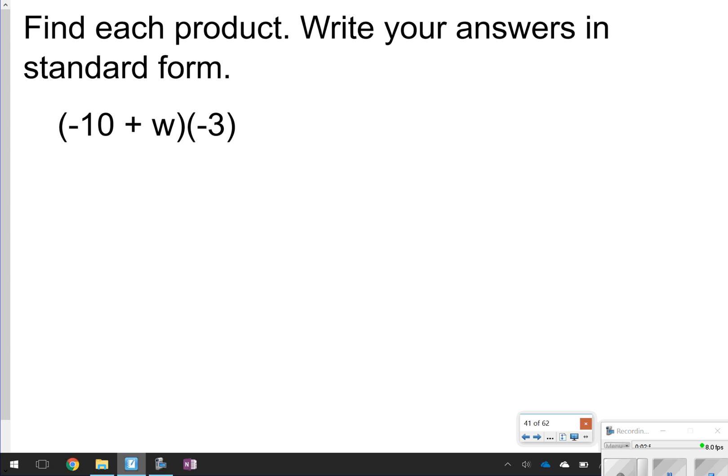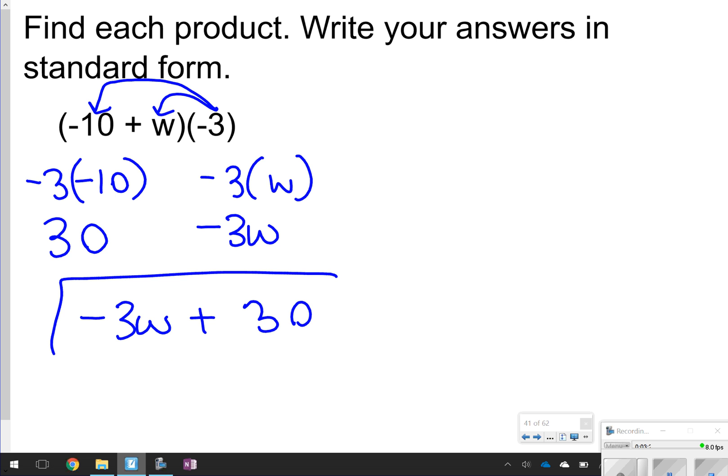For this one, sometimes you're going to see the number at the end and that's okay. But what you just want to make sure of is that you're still distributing that single number to everything within the parentheses. So you're going to be doing negative 3 times negative 10 and negative 3 times W. Negative 3 times negative 10 is positive 30 and negative 3 times W is negative 3W. Again, you want to make that variable in front. So negative 3W plus 30.